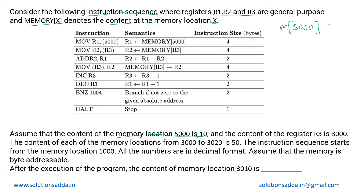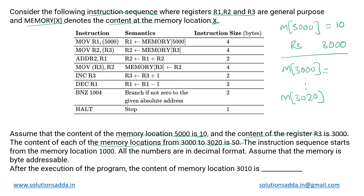Initially at location 5000 the content stored is 10, and the content of register r3 is 3000, so r3 is initially containing 3000. The content of each memory location from 3000 to 3020 is 50 — so all of those locations have the same data, 50. The instruction sequence starts executing from memory location 1000. The initial content of memory location 3010 is 50.